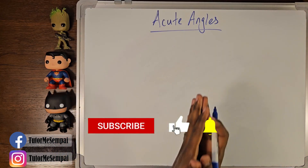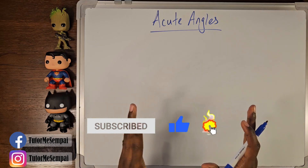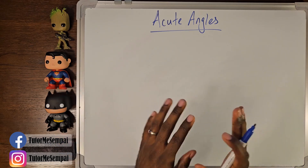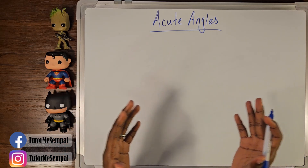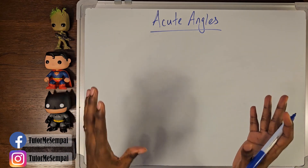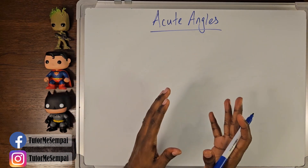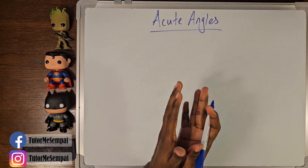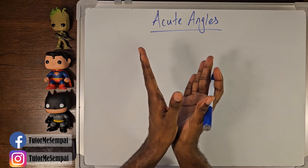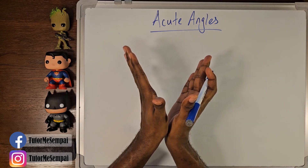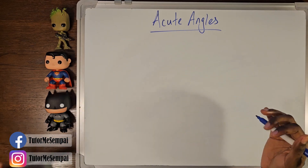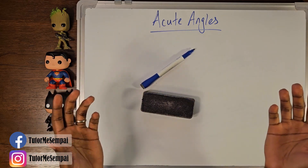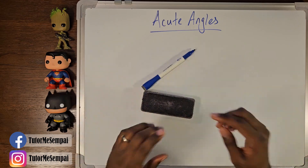Today we're gonna be talking about six different types of angles, but before we jump into those, let's first ask ourselves the question: what is an angle? An angle in a very simple way is just gonna be the space between two objects that are touching at the same point. Any straight objects that are touching at the same point. You can make an angle with your hands — notice they're touching here at the same point. The space between them will be your angle.